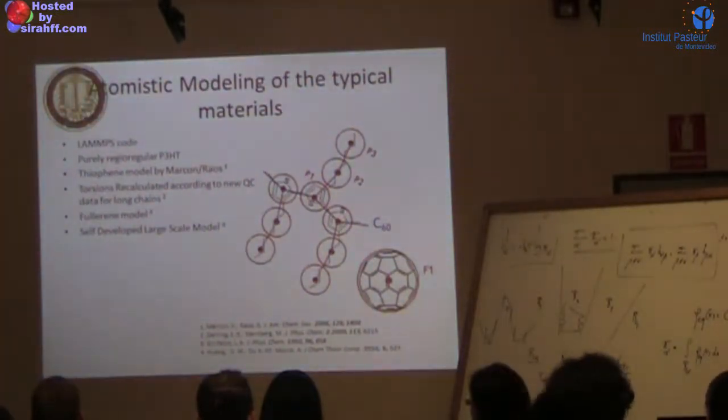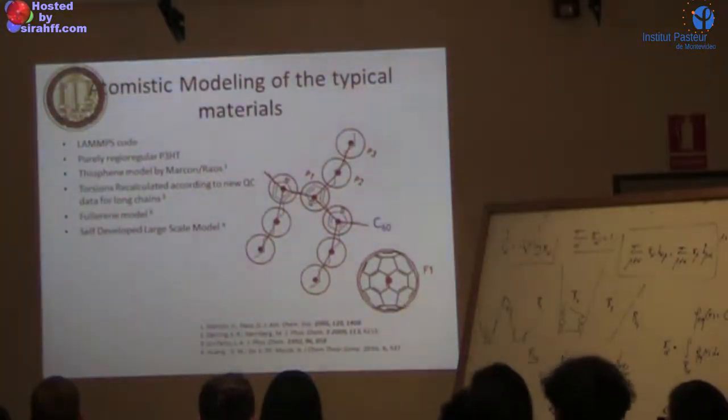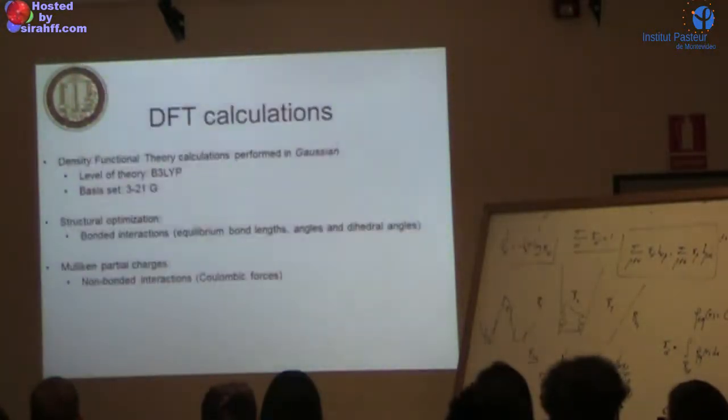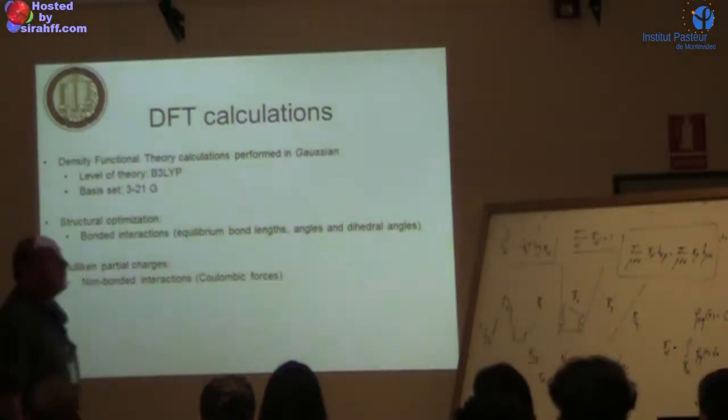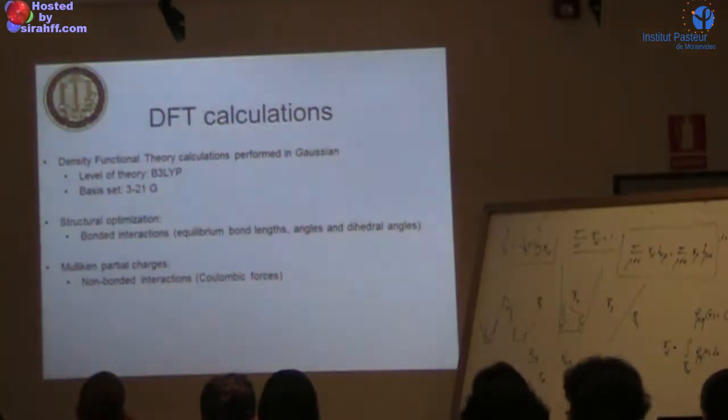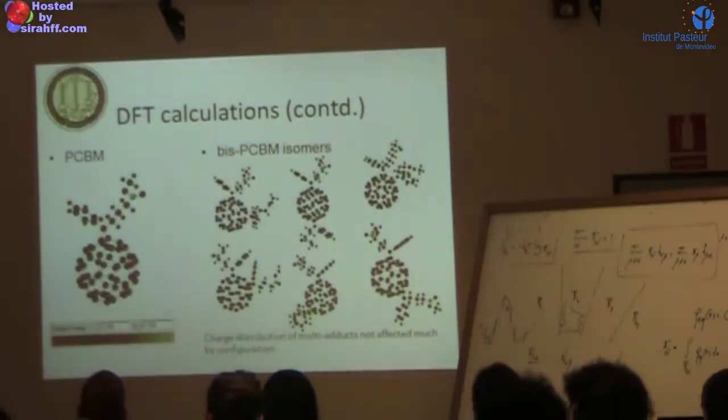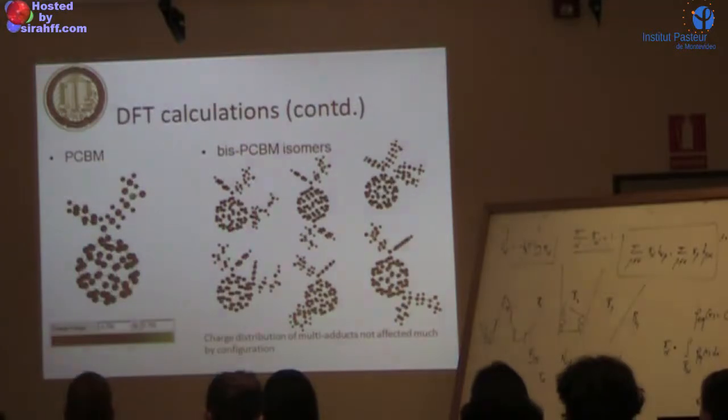This is the mapping we later use - a 3-to-1 mapping for each monomer. We did relatively simple B3LYP 6-31G basis set because we don't need the charges exactly, just reasonably. We did structural optimization and used different ways of partial charges, starting with Mulliken and then ESP charges.